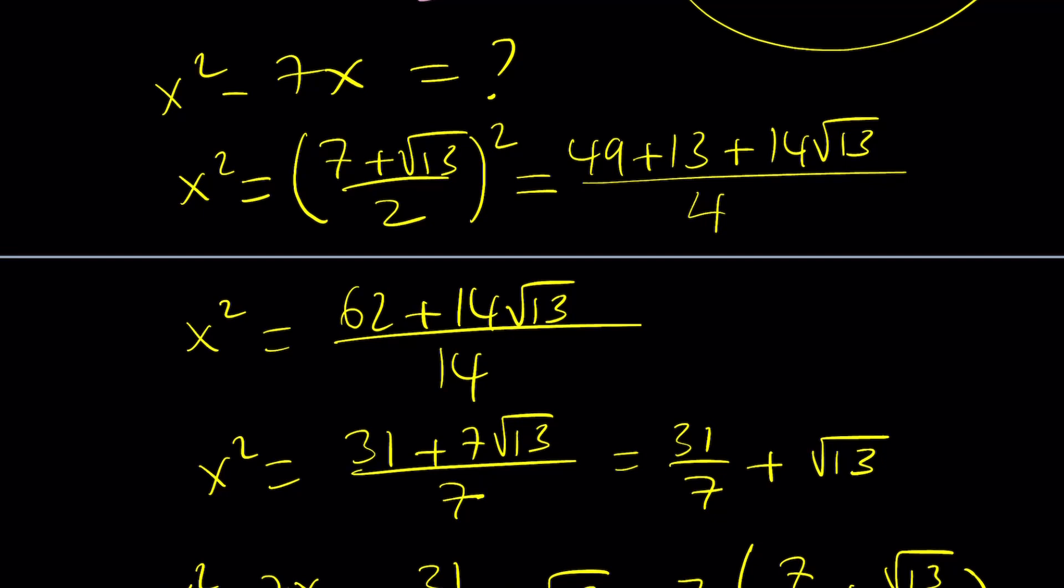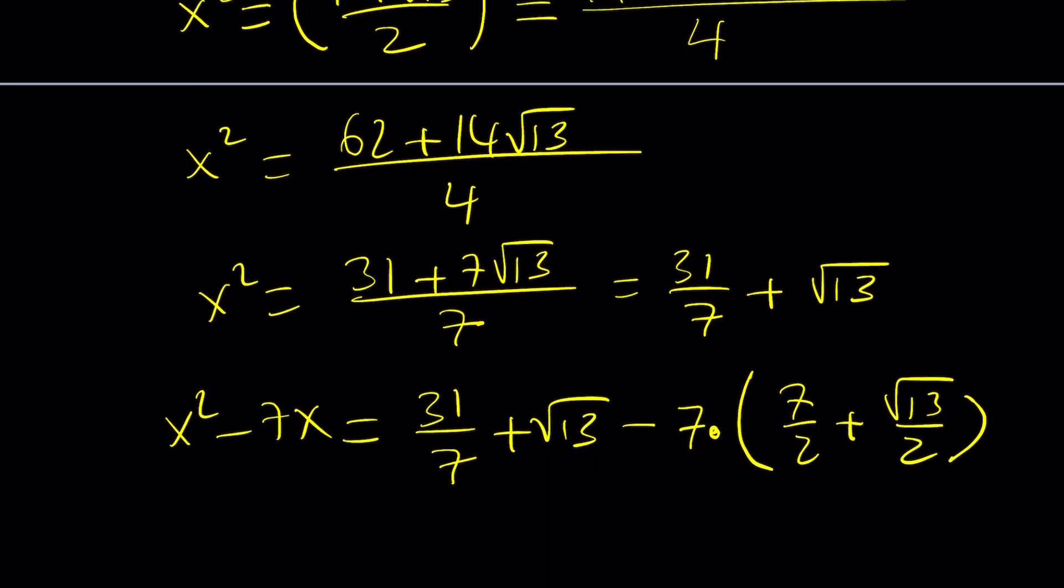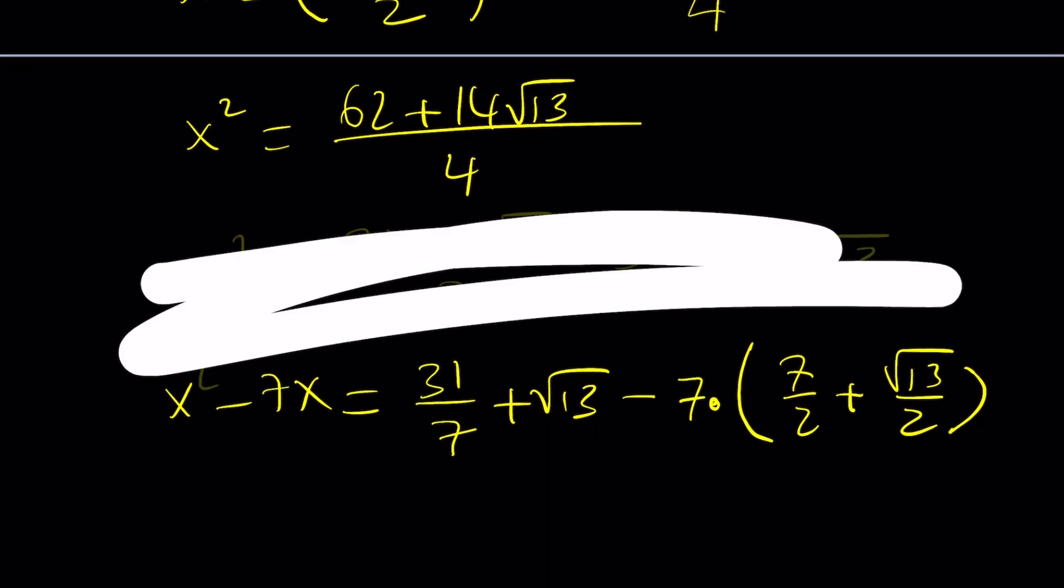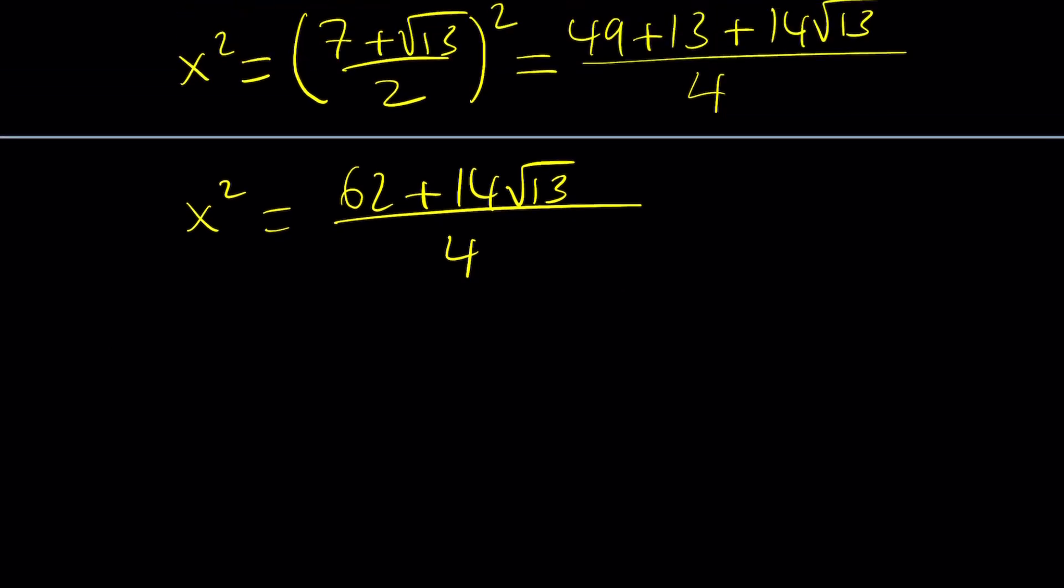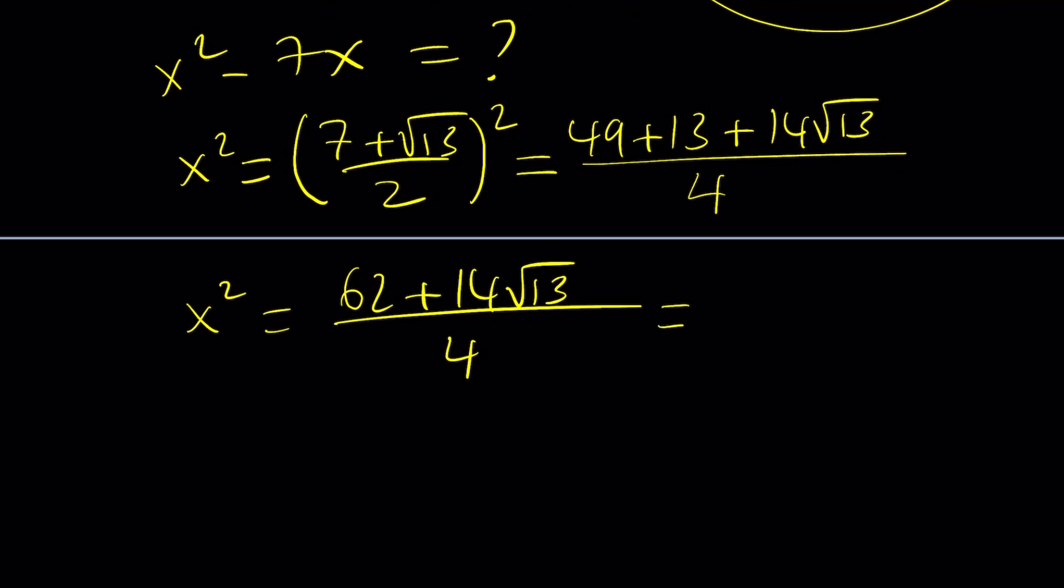That's a 62. That's a 4. Oh okay, that's not a 14, that's a 4. I see where it is. I don't know why I wrote a 14 there. That's supposed to be a 4. There you go. Let's go ahead and fix the rest. So from here, we can simplify this again. 31 plus 7 root 13 over 2.